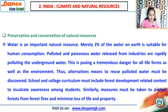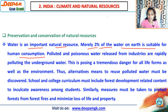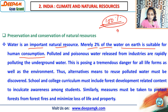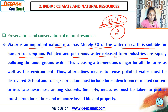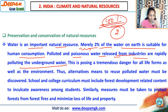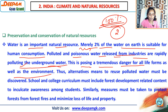Preservation and conservation of natural resources — water is an important natural resource. Merely two percent of water on earth is suitable for human consumption. From 100% of water, we can use only two percent. Polluted and poisonous water released from industries is rapidly polluting underground water. This polluted black-colored water, when released on land, pollutes the land and even underground water, posing a tremendous danger for all life forms and the environment.